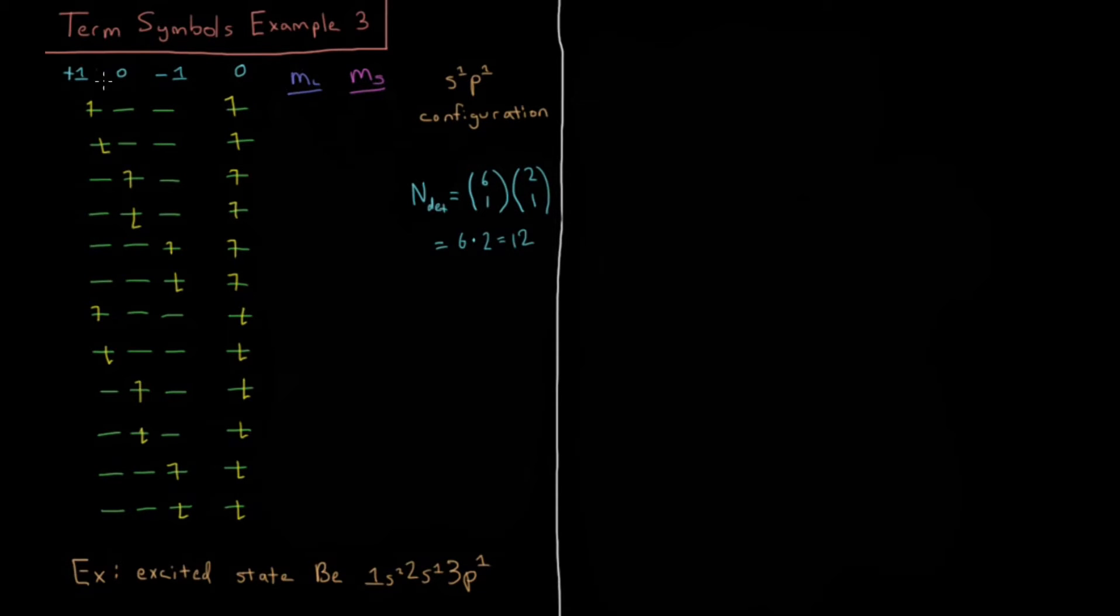I'm going to fill out m sub l, adding up the values for the m sub l quantum number from the occupied spin orbitals here, so plus 1, 0, minus 1, 0, add them all up. That is going to give me plus 1, plus 1, 0, 0, minus 1, minus 1. Then that pattern is going to repeat as I have drawn it.